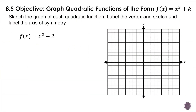We're going to graph — notice the directions say: sketch the graph of each quadratic function, label the vertex, and sketch and label the axis of symmetry. We're going to start by identifying our vertex. I'm also going to talk about transformations — the fact that this shifts down. If you look at this, my vertex is going to be at (0, -2). It's nice if you can identify that vertex right off the bat based on the information given. The vertex is at (0, k), and in this case k is negative two.